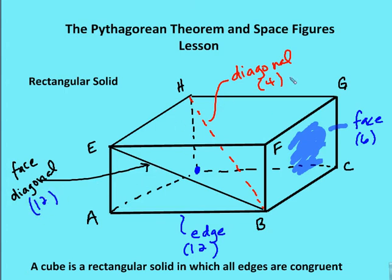So in summary: I have four diagonals, 12 face diagonals, 12 edges, and six faces. There are a lot of different components on a rectangular solid. A cube is a rectangular solid in which all the edges are congruent in length — just as a heads-up in terms of definition.